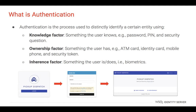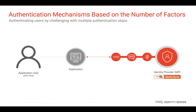The most common form of authentication is carried out by entering the username and password. However, using just the password may not be a strong authentication mechanism. You can pick the number of authentication factors to be used. Single-factor authentication utilizes a single factor to authenticate an entity. Two-factor authentication, also known as 2FA, utilizes two factors. Multi-factor authentication, also known as MFA, utilizes two or more factors — so 2FA is also a subset of MFA. You can increase authentication strength by using more factors.